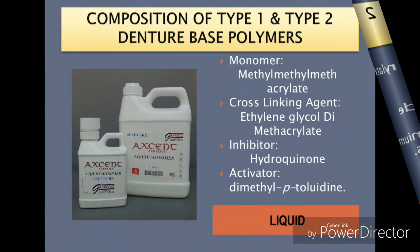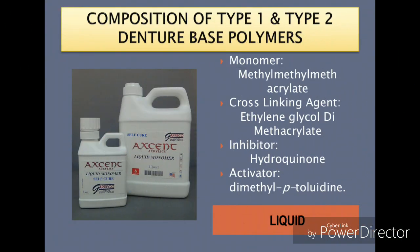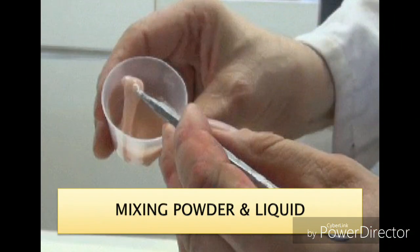The liquid contains methyl methacrylate monomer and a cross-linking agent which is ethylene glycol dimethacrylate. It also contains hydroquinone as an inhibitor which controls the polymerization reaction. In the case of type one, which is heat-cure acrylic, the activator is heat, whereas in the case of type two, which is self-cure acrylic, the activator is dimethyl-p-toluidine, which activates the initiator and the polymerization reaction starts.